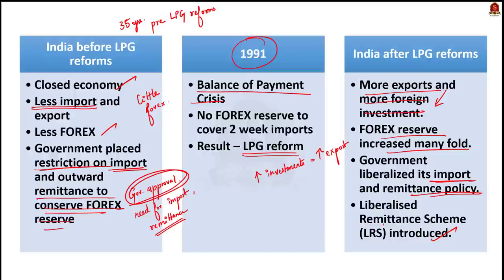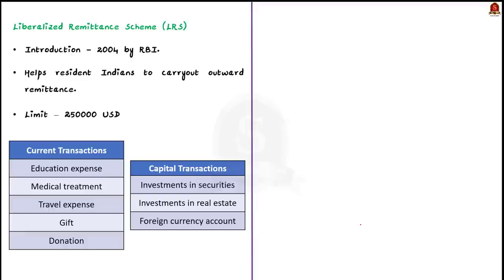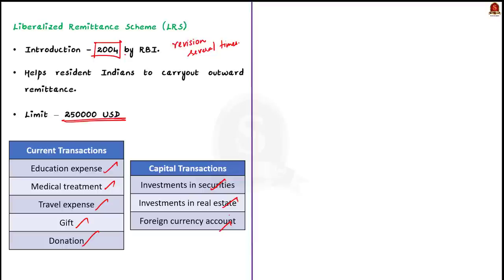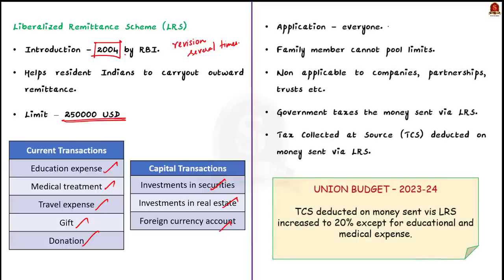As part of the liberalization process, India removed some restrictions on outward foreign remittance under the famous Liberalized Remittance Scheme, shortly referred to as LRS. LRS is a facility provided by the RBI. It allows Indian resident individuals to remit a certain amount of money outside India every financial year for various purposes. The scheme was introduced in 2004 and has been revised several times since then. Under the LRS scheme, an Indian resident individual can remit up to $2,50,000 US dollars per financial year for permissible current or capital account transactions.